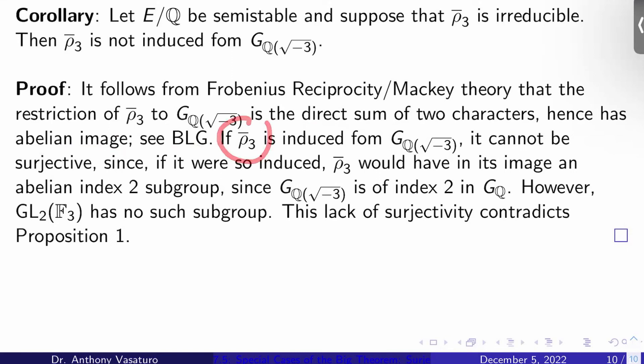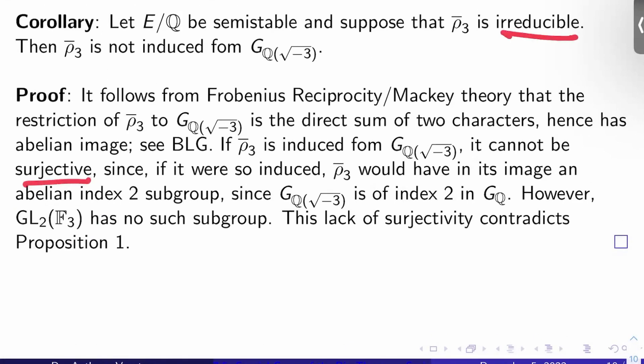Now, if rho bar 3 was induced from G sub Q adjoin root negative 3, it couldn't be surjective. That's the problem, which would contradict the proposition I just gave you because it's irreducible. So why couldn't it be surjective? Well, if it were so induced, the point is that rho bar 3 would have in its image an abelian index 2 subgroup, because basically this Galois group has index 2 in GQ. So this is Galois theory again. The problem is GL2 of F3 doesn't have an abelian index 2 subgroup. So there's your contradiction. So we're lacking surjectivity despite irreducibility. That's a contradiction to Proposition 1, the thing we just got done proving.